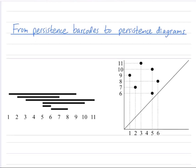And you can also go backwards. So these are two representations of persistent homology that contain exactly the same information, just they're presented in a different format. All right. So let's jump right in.